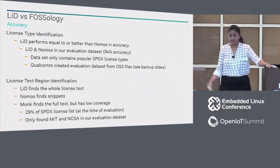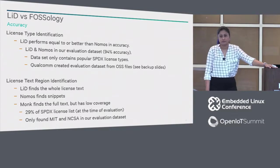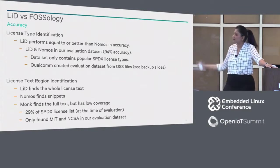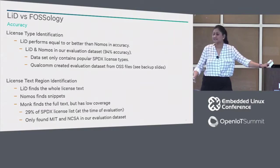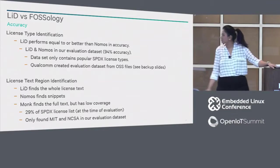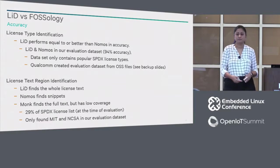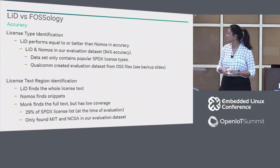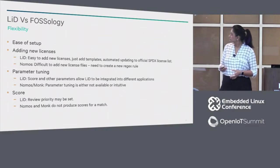In terms of accuracy — did it identify the right license and the region within source code? For our real-world evaluation data set, LID does about the same or a little better than Nomos, with 94% accuracy. Additional data is available in backup slides. In terms of the license text region, LID is built to catch the entire license text, while Nomos is built to find snippets, so using Nomos you might not generate everything you need for your SPDX file. Monk is built to find full license text, but the coverage was pretty low when we evaluated it.